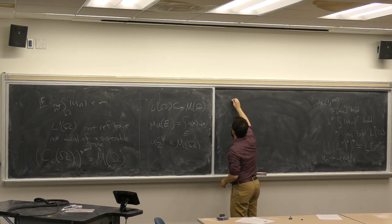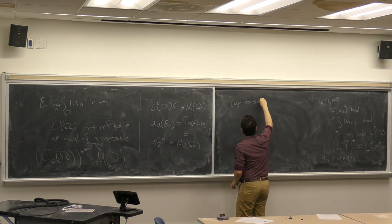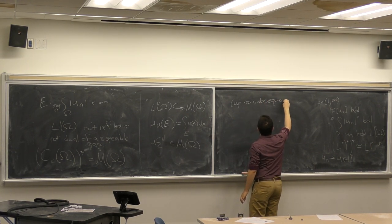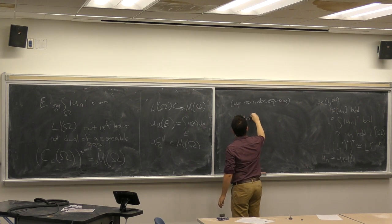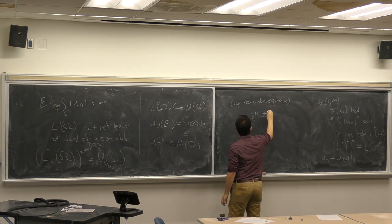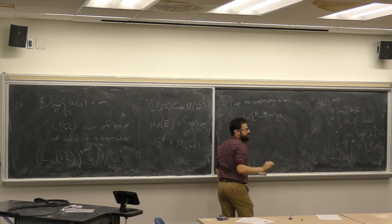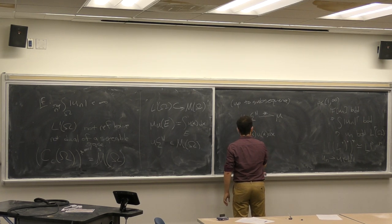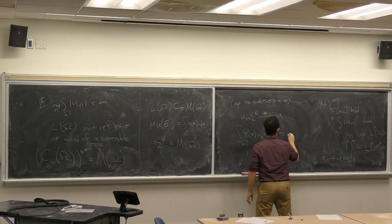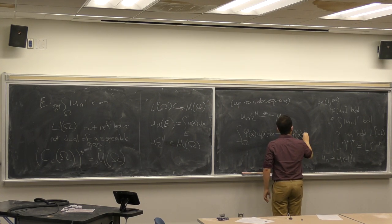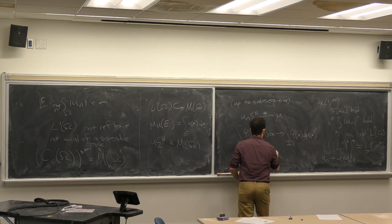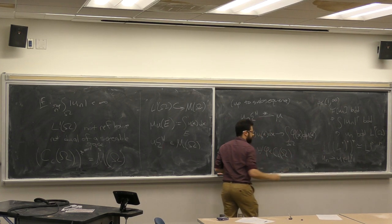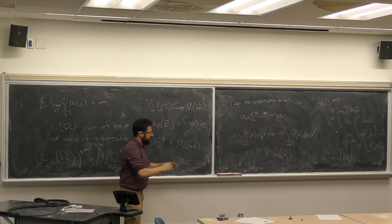Basically, up to a subsequence, u_n times the Lebesgue measure is going to converge weak-star to some measure μ, where this means the integral of φ(x) u_n(x) dx over Ω converges to the integral of φ(x) dμ over Ω, for every φ continuous with compact support.